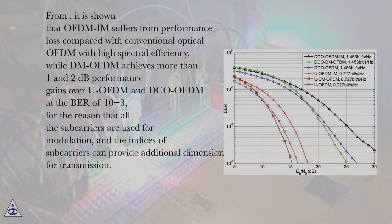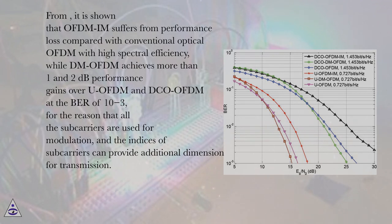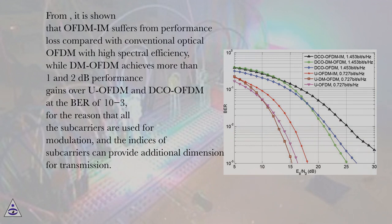From the results, it is shown that OFDM suffers from performance loss compared with conventional optical OFDM with high spectral efficiency, while DM-OFDM achieves more than 1 and 2 dBm performance gains over U-OFDM and DCO-OFDM at the BER of 10⁻³, because all subcarriers are used for modulation and the indices of subcarriers can provide an additional dimension for transmission.